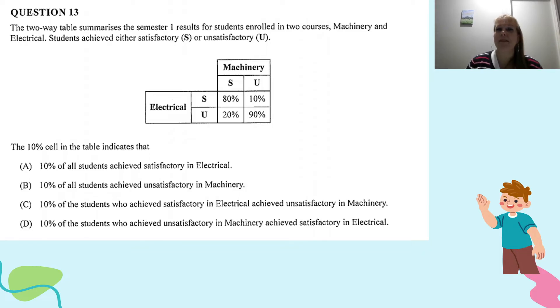The 2-way table summarizes the semester 1 results for students enrolled in two courses, Machinery and Electrical. Students achieved either Satisfactory S or Unsatisfactory U. Here's our 2-way table and we need to find out what this 10% is referring to over here. Now, before we look at all of the options, let's just make sure we understand how to read this 2-way table.